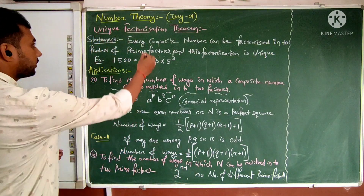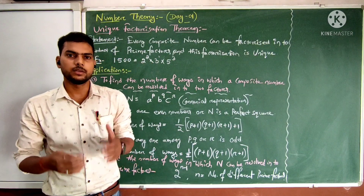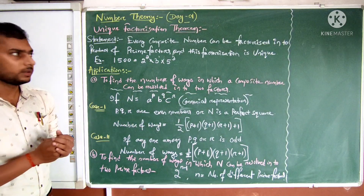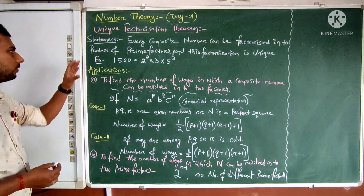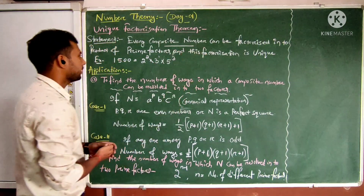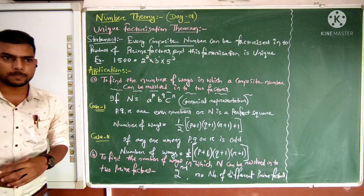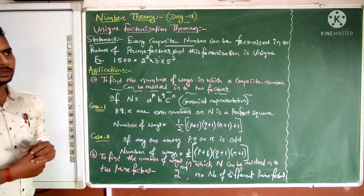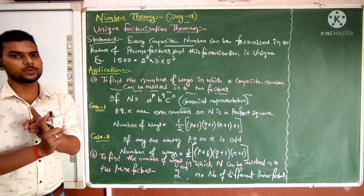So, Unique Factorization Theorem — what does it mean? In maths, in number theory, this theorem has great emphasis. Let us have the statement: every composite number can be factorized into a product of prime factors, and this factorization is unique. Depending upon the factors present in a number, we divide numbers into two parts: prime numbers and composite numbers.